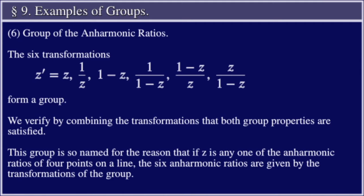We verify by combining the transformations that both group properties are satisfied. This group is so named for the reason that if z is any one of the anharmonic ratios of four points on a line, the six anharmonic ratios are given by the transformations of the group.